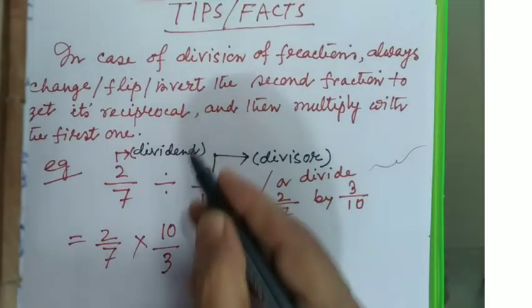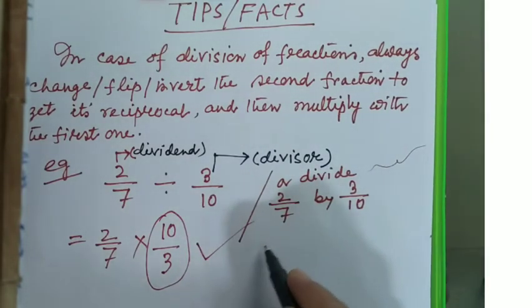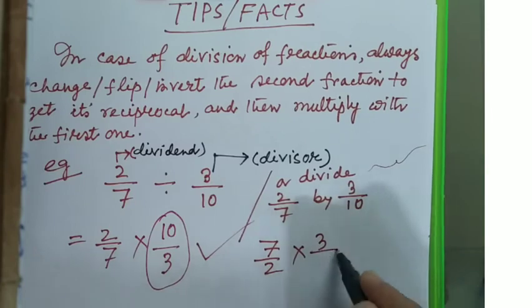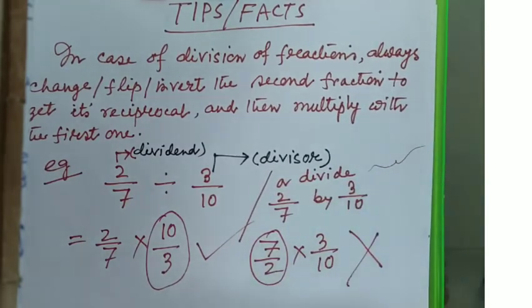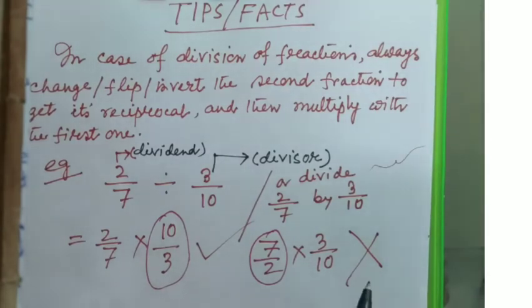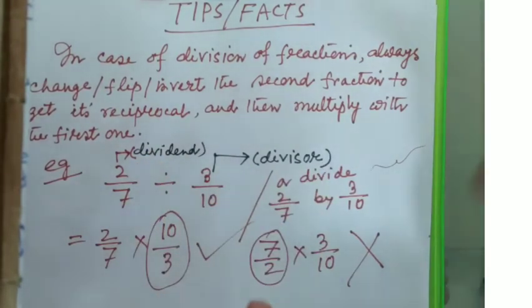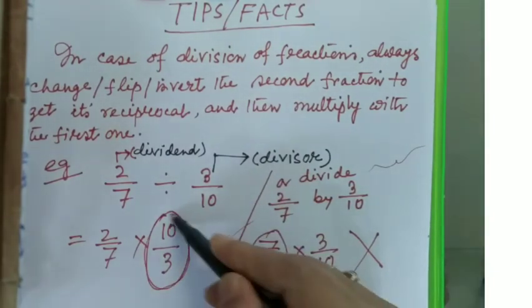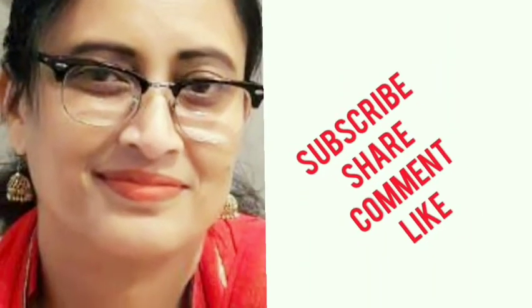If I write 2/7 × 10/3 (reciprocal will be 10/3), this is the correct answer. But if I write 7/2 × 3/10, this is wrong. Always multiply the dividend with the reciprocal of the divisor. Remember this—this one is the right one.